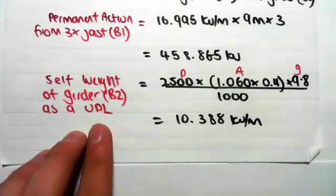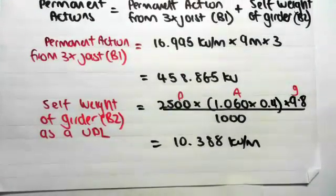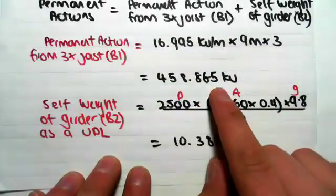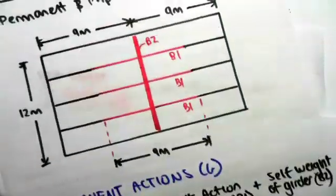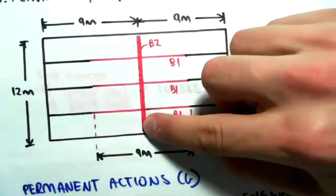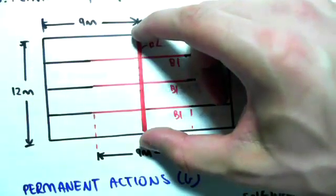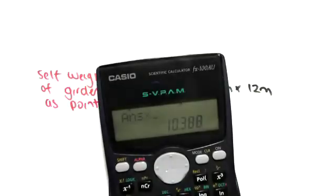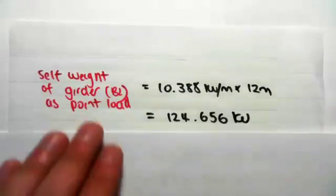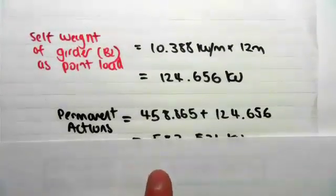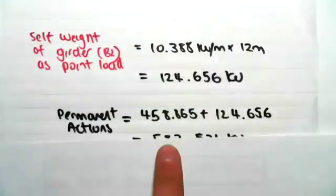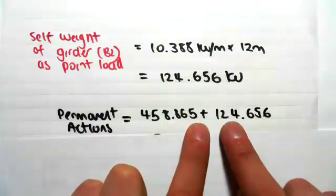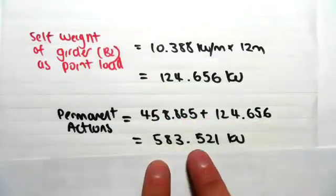That's the self-weight as a UDL. Our final answer will be in point loads, but it's important to leave this as a UDL for now — you'll see why in the next video. As a point load, it's 10.388 kN/m × 12 m = 124.656 kN. So the total permanent action is 458.865 + 124.656 = 583.521 kN.